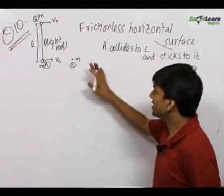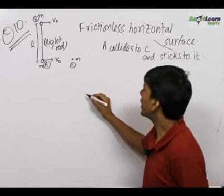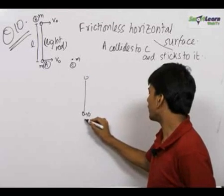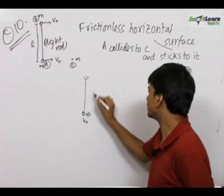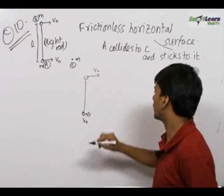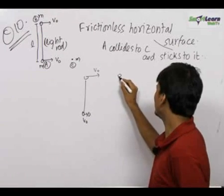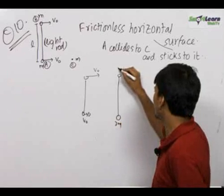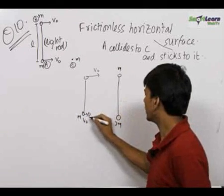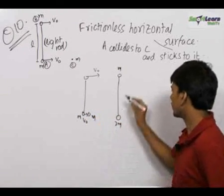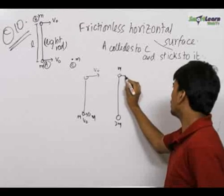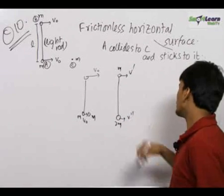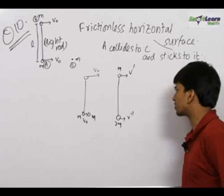Before and after the collision, let us draw the diagram. This is the diagram before the collision, and this is the diagram after the collision, where here we have a mass 2m and here a mass m — this is m and m. So this will be moving with some velocity V dash, and this will be moving with some velocity V double dash.